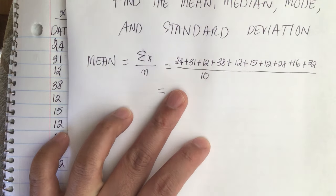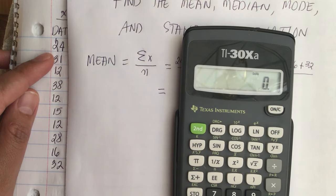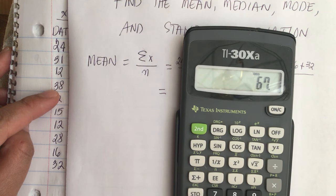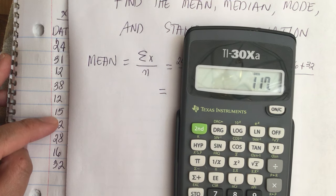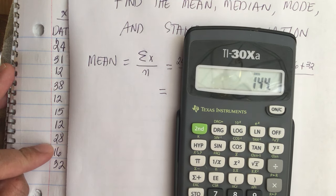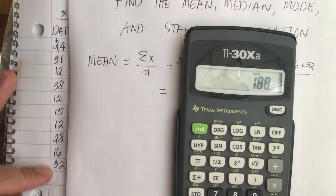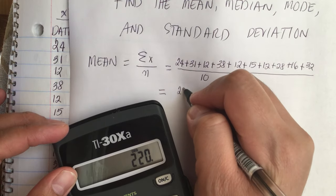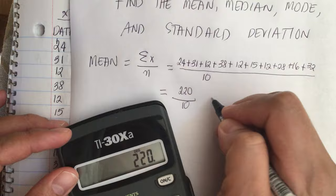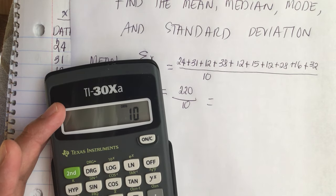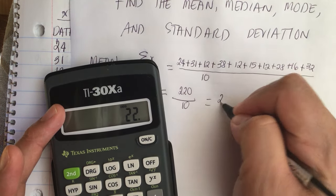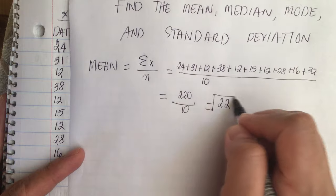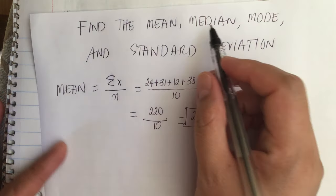Using our calculator: 24 + 31 + 12 + 38 + 12 + 15 + 12 + 28 + 16 + 32 equals 220, and 220 divided by 10 equals 22. So the mean is equal to 22.